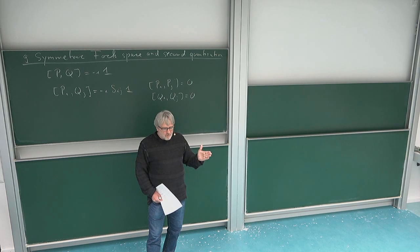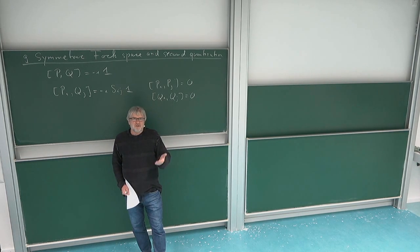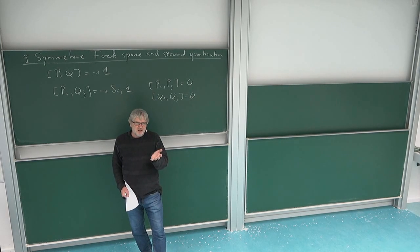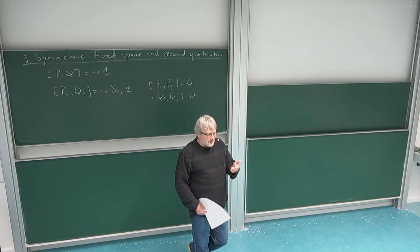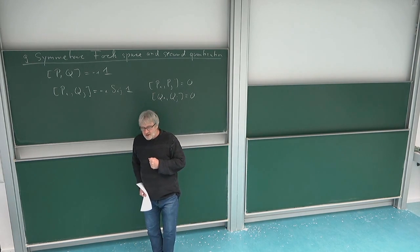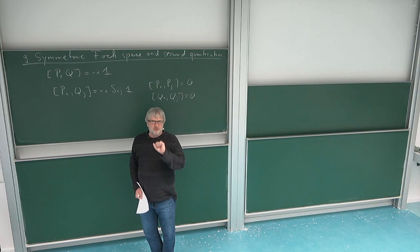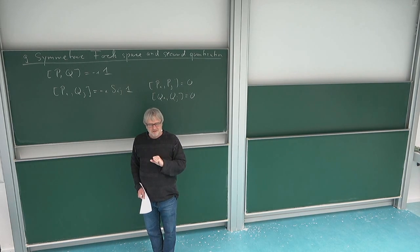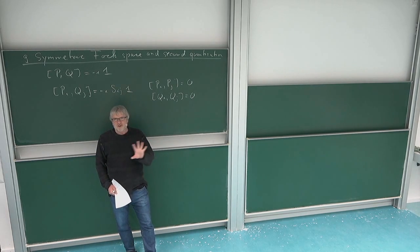Now of course we would like to go to the infinite situation where N equals infinity. But then we have a problem, because it's not so clear. We should realize this on L2 of R^∞, and there we are somehow lost. In particular, because we consider functions with respect to integration, we need a Lebesgue measure. We would need functions in infinitely many variables and we would like to integrate them with respect to Lebesgue measure, and this is something which does not really exist in infinite dimensions, so we cannot do it directly in this way.